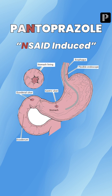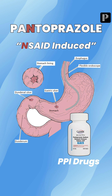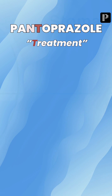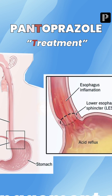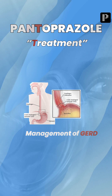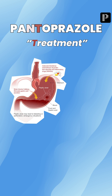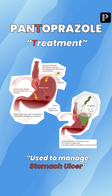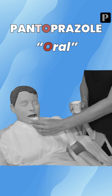The next letter is N — NSAID-induced peptic ulcer disease. PPIs are the drug of choice. The next letter is T — treatment. These drugs are used in the treatment of bleeding peptic ulcer disease, also in the management of GERD, in pre-anesthetic medication, and also to manage stomach ulcers as well as duodenal ulcers.